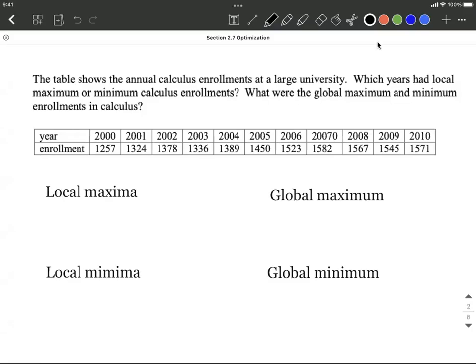This table is showing us annual calculus enrollments at some large university. Our goal is to pick out wherever we have local maxima or minima, as well as a global maximum and a global minimum. Let's jump right in.